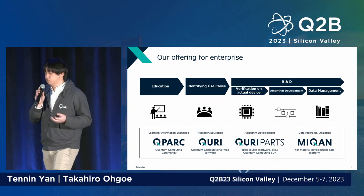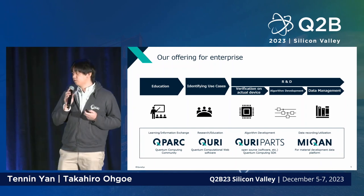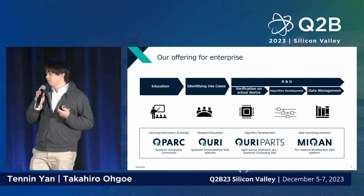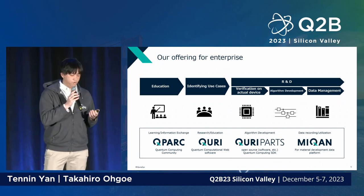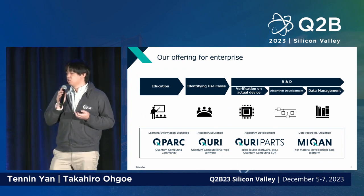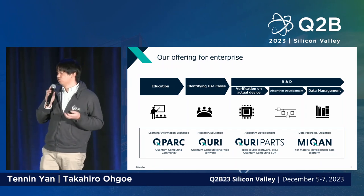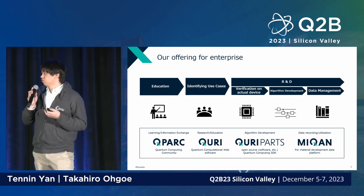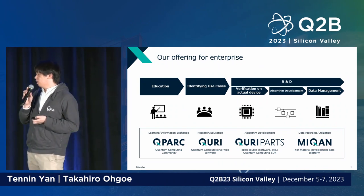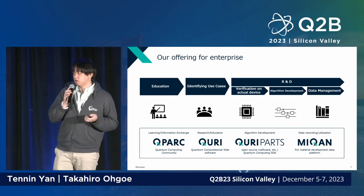What we are doing is not just quantum computing algorithms research, but also education for industry and academia. For example, our community Q Park gathers people interested in quantum from industry, teaches them what a quantum computer is, why this device can do first-principles calculations, and then works together using our product QD to identify use cases. After that, we do verification of algorithms on actual quantum devices and algorithm development with end users, using our open-source software QD parts. We're also studying data management for computational and experimental chemistry.